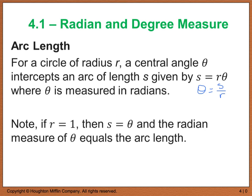So we took this formula here, rearranged it, solved for s, and got s equals r theta. Now, if r equals 1, then s equals theta, or your radian measure of theta equals the arc length.